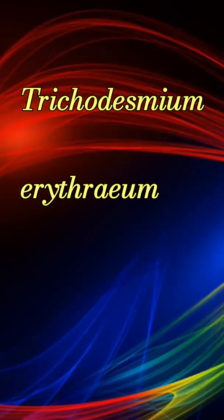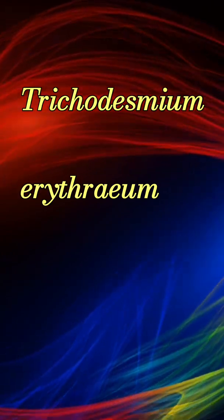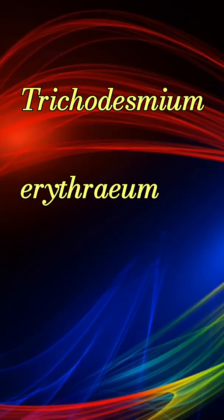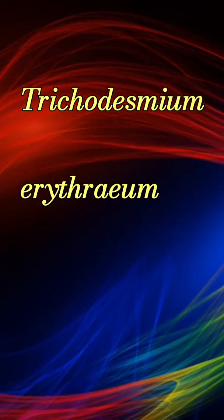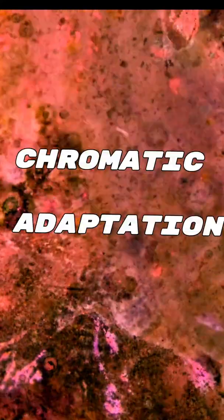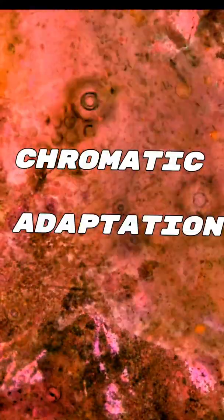Have you heard the name Trichodesmium erythrium? It is a reddish colored cyanobacterium which occurs in such abundance that a sea is named after its color — that is, the Red Sea. This gydaecophenomenon is also known as chromatic adaptation.